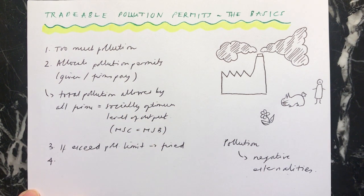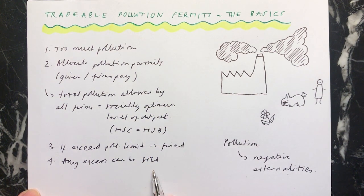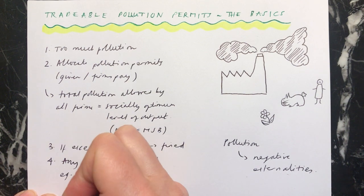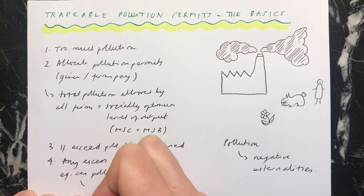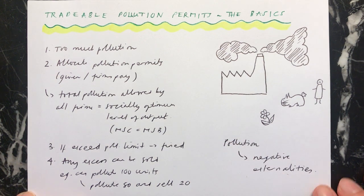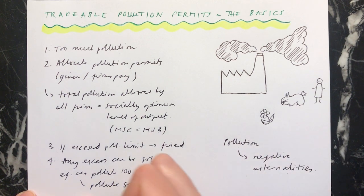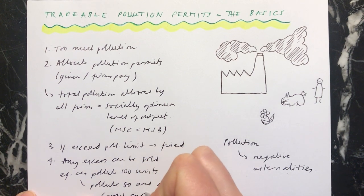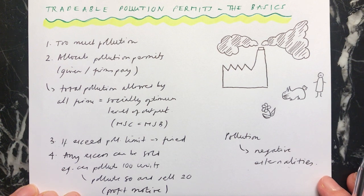The really clever thing about the permit scheme is that any excess permit can be sold to another firm. So if a firm is allowed to pollute, for example, 100 units, they could actually pollute 80 and sell the right to pollute 20. And therefore they're making money out of this, particularly if they were given the permit in the first place. The idea is that it's encouraging firms to change their behaviour because they have a profit motive — they can sell any unused permits, either a whole permit or part of a permit.